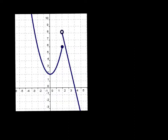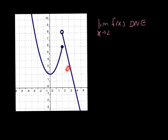Today we're going to take a look at one-sided limits. Let's take a look at this graph and see specifically what's happening at x equals 2. You're probably noticing that the limit as x approaches 2 of this function does not exist, and the reason is that the limit from the left is not equal to the limit from the right.